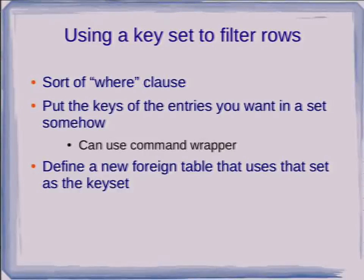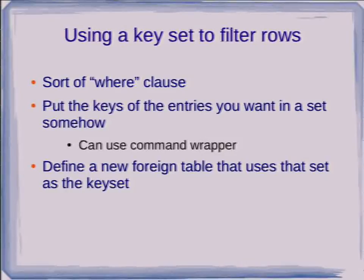You can also use sets of keys as a kind of WHERE filter on a table. You can put the keys you want in a Redis set, define a table which uses that set as its key set, and pull that back — effectively subsetting the data you want. They are actually using this in the ad server and it works pretty well. We don't have support for a lot of pushdown in the foreign data wrapper yet, so you're going to need to use these sorts of tricks at least for now.